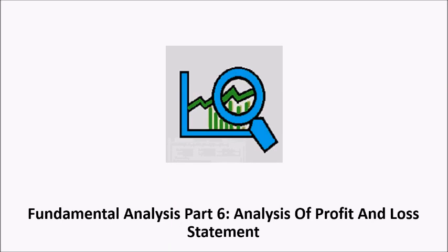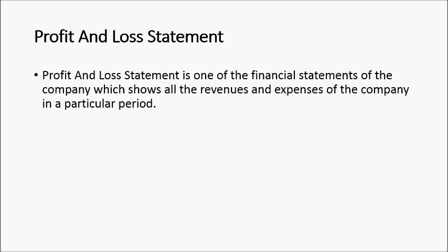Fundamental analysis part 6: analysis of profit and loss statement. The profit and loss statement, or income statement, is one of the financial statements of a company which shows all the revenues and expenses of the company in a particular period. All profit and loss statements usually have three parts: one which shows all the revenues, a second which shows all the expenses, and a third which shows appropriations.